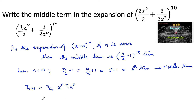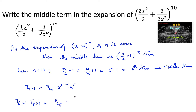Since the sixth term is the middle term, we write T6 = T(5+1), so we consider r = 5 and n = 10. This gives 10C5 · (2x²/3)^(10−5), that is to the power of 5.